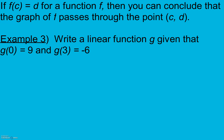Continuing on at section 8.7: if f of c equals d for a function f, then we can conclude that the graph of f passes through the point (c, d). So f of x is usually what we have, and instead of x we have some number c, and that gives us d. And remember that f of x is just like y, so it's like we have y equals d. We can pull ordered pairs from these points.